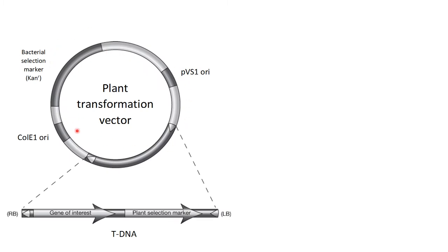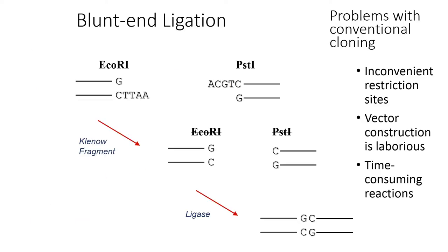A generic plant binary vector has two origins of replication: pVS1 origin for propagation in Agrobacterium and ColE1 origin for propagation in E. coli. The backbone of the vector contains an antibiotic resistance gene for bacterial selection, which is kanamycin resistance. The T-DNA contains a plant selectable marker and gene of interest.